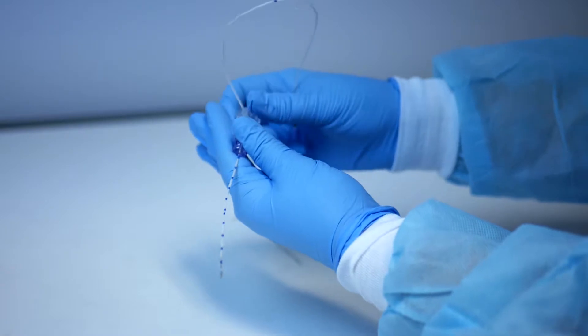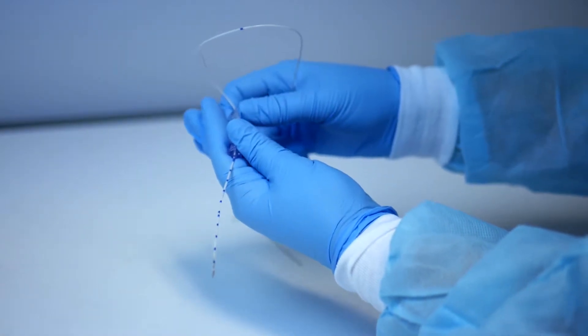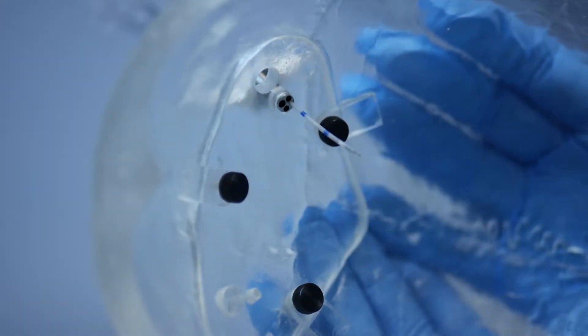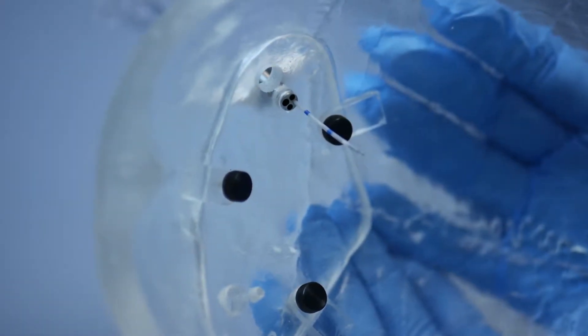This preloading technique ensures the perfusion probe is placed at the ideal depth between 2.5 and 3 cm below the dura. Set the preloaded assembly aside.